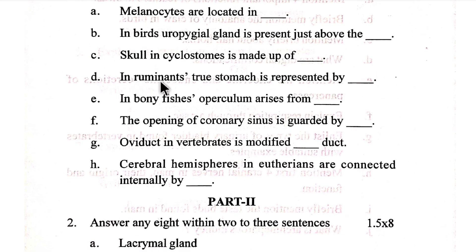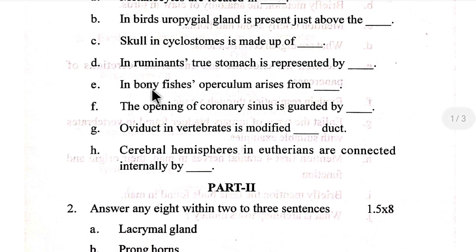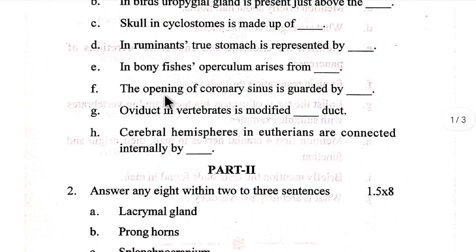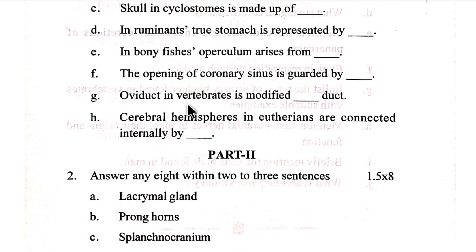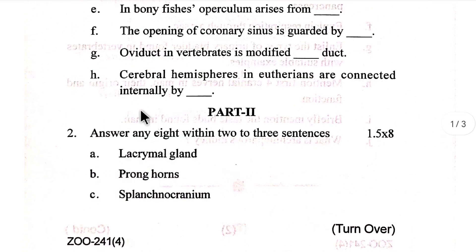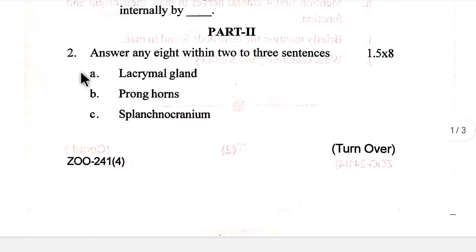In ruminants, true stomach is represented by [blank]. In bony fish, operculum arises from [blank]. The opening of coronary sinus is guarded by [blank]. Oviducts in vertebrates is modified by [blank]. Cerebral hemispheres in uterians are connected internally by [blank]. Answer any eight within two to three sentences.